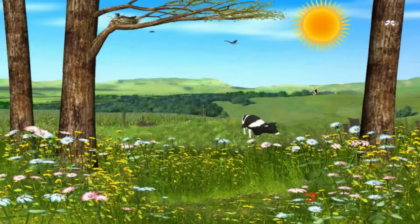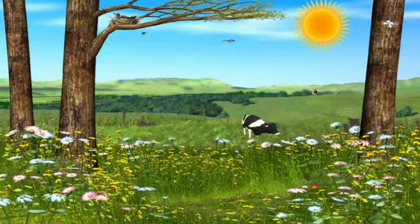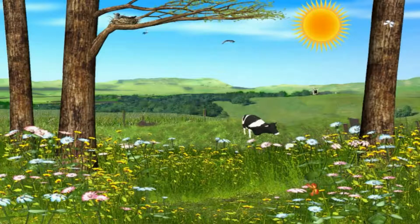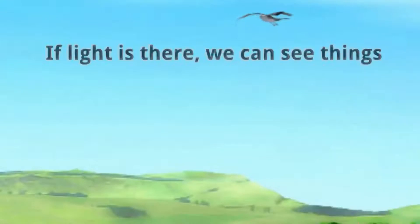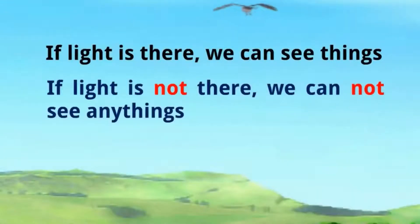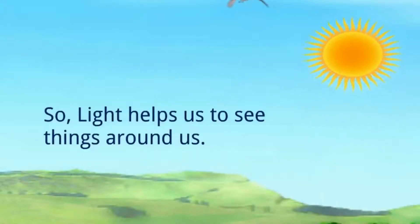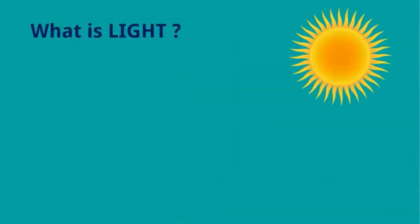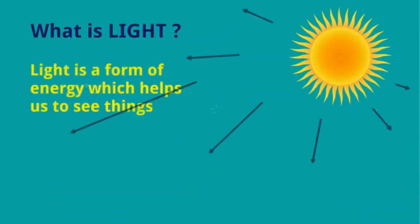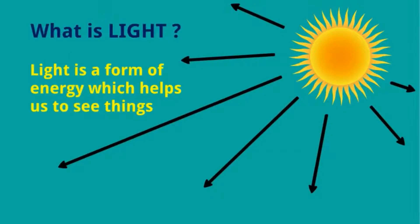But the next day, again sunrise and you will see everything once again. If light is there we can see everything. If light is not there we cannot see anything. So we can say light helps us to see things around us. What is light? Light is a form of energy which helps us to see things around us.